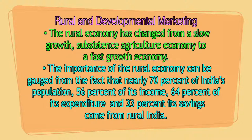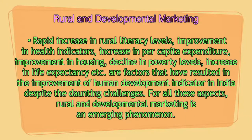The rural economy has changed from a slow-growth subsistence agriculture economy to a fast-growth economy, with lots of migration from rural to urban areas. Nearly 70% of India's population lives in villages — 56% of India's income, 64% of its expenditure, and 33% of India's savings come from rural areas. This is an important marketing opportunity. There has been rapid increase in rural literacy levels, improvement in health indicators, and increase in per capita expenditure.